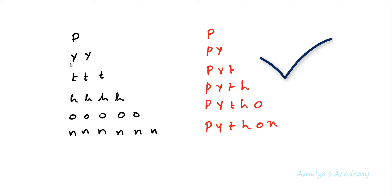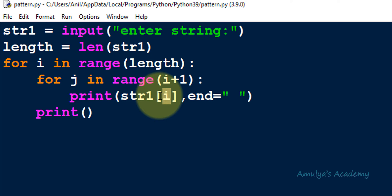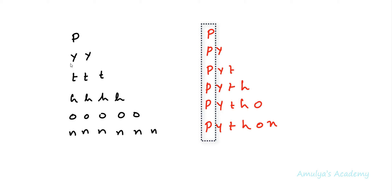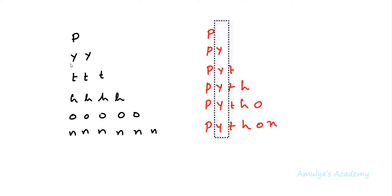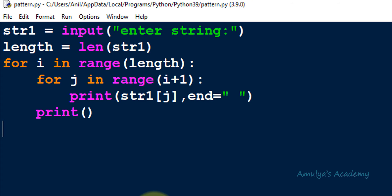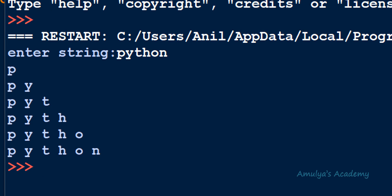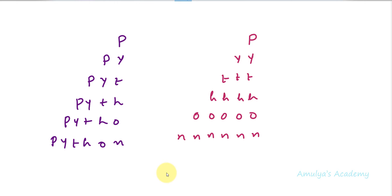For the next pattern, no need to change much — just change str1[i] to str1[j]. In this second pattern every column contains the same character: column 0 contains 'p', column 1 contains 'y', and so on. That's why the column variable j is used for indexing. If I execute this now we get the second pattern.